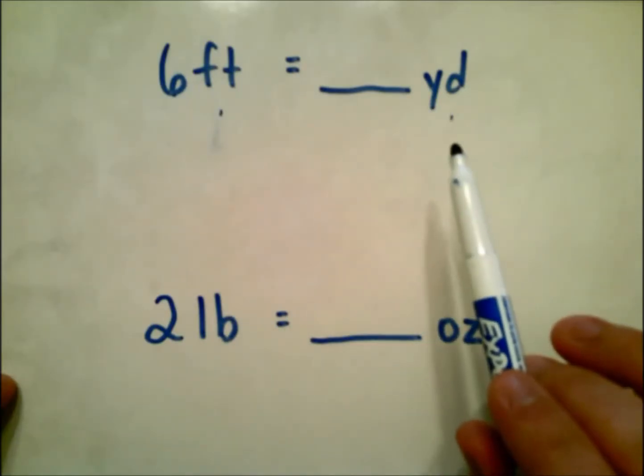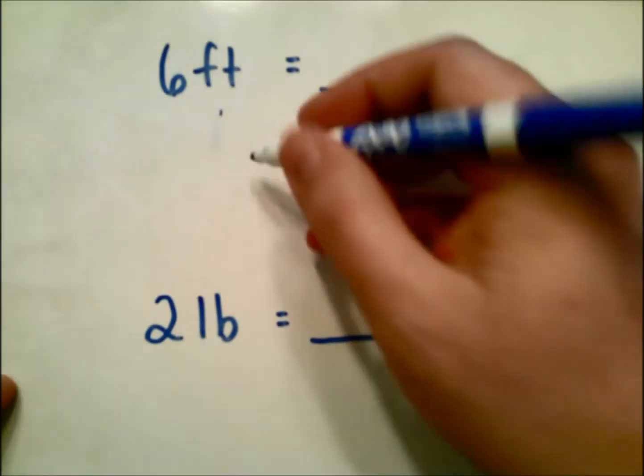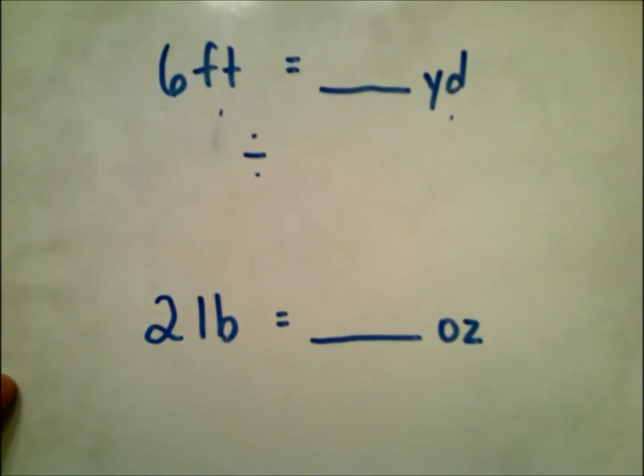When we go from a smaller unit to a larger unit, the operation we are going to do is divide. We're going to take our base number that we got here, we're going to divide it.